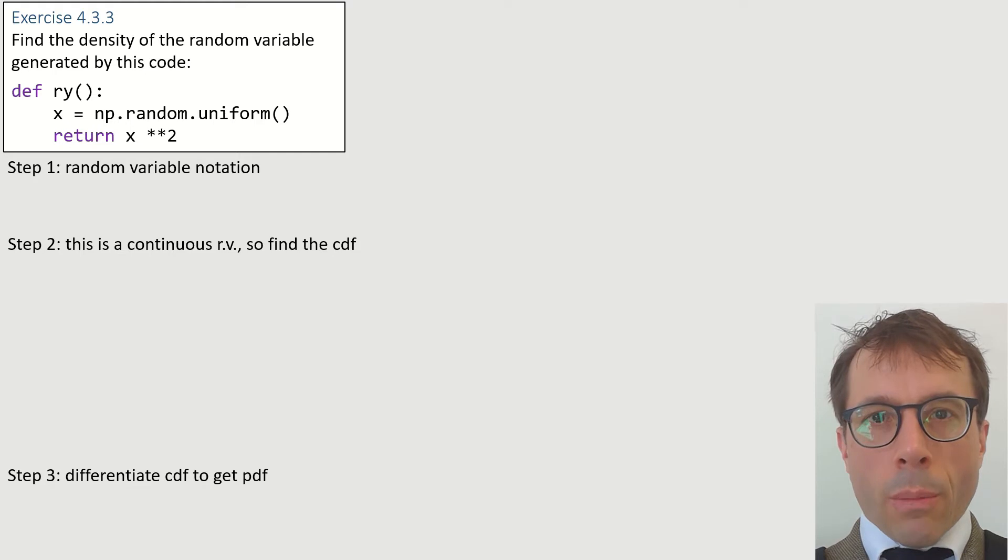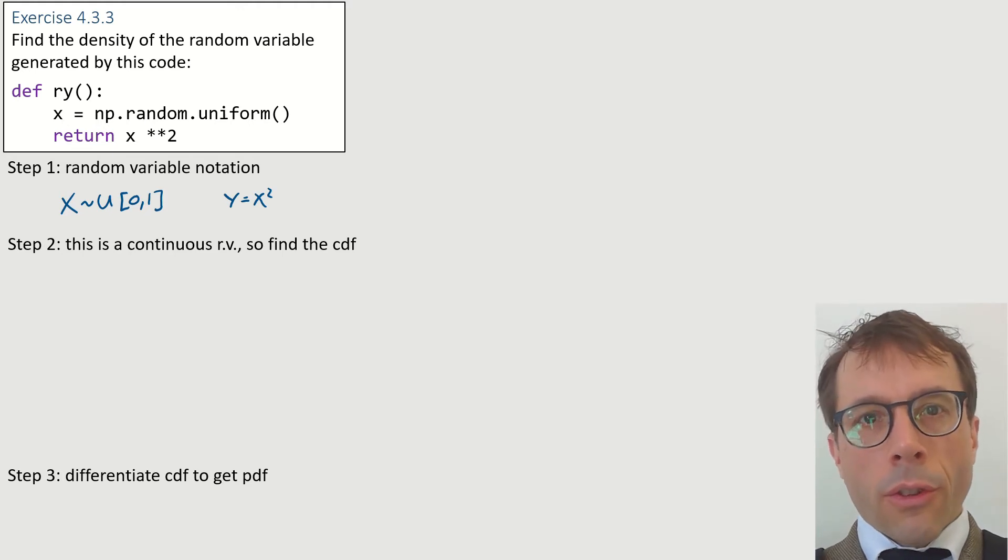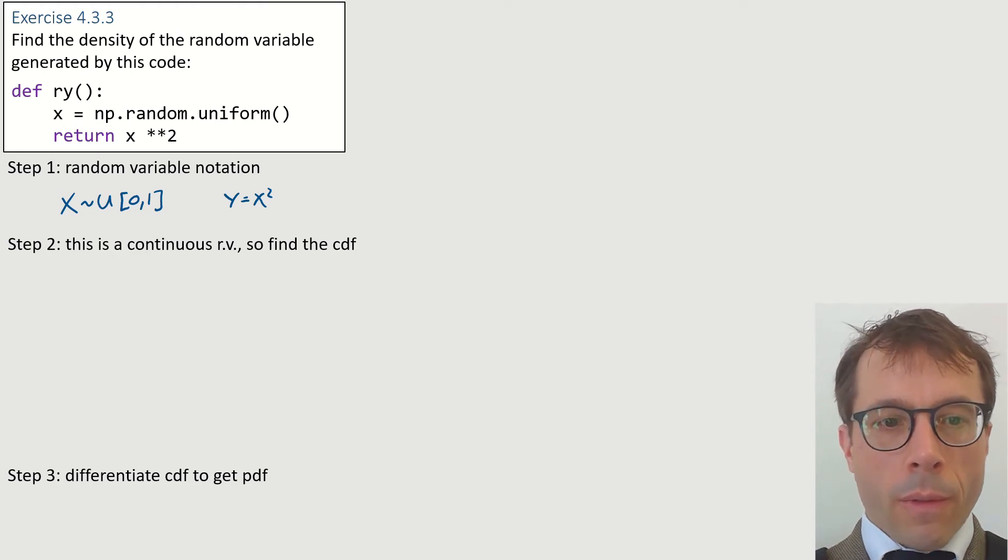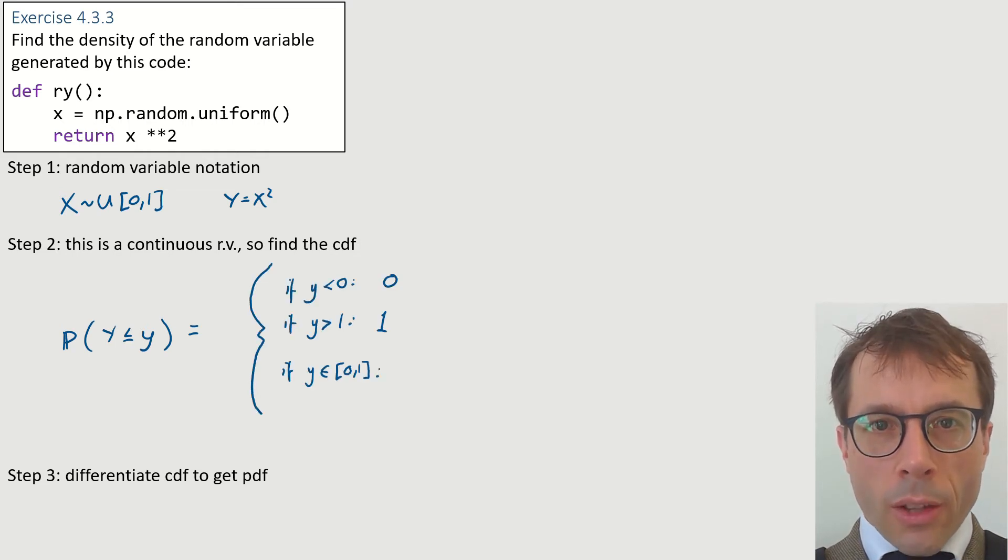Like the last question, the model here is built from a uniform random variable. Next, since this is a continuous random variable we're working with, we'll work out the CDF for y, the random variable we're interested in. Here, I'm going to split it into three cases, depending on the value of little y. Remember the CDF for the uniform distribution that we looked up on Wikipedia? That had three cases too. It's quite common to have cases like this, for random variables that take values in a limited range.